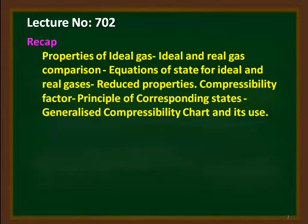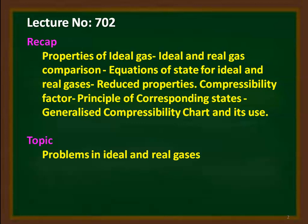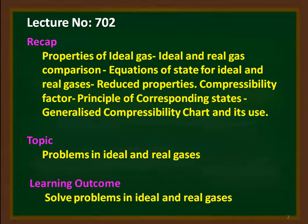Continuing from the previous lecture, we discussed the theory part of properties of ideal and real gases, equation of state of ideal gas, real gas, reduced properties, compressibility factor, the principles of corresponding state, and the generalized compressibility chart and its use. So in this lecture, we solve few problems from the university question paper in the topic ideal and real gases. The learning outcome: at the end of the lecture, the student will be able to solve problems in ideal and real gases.